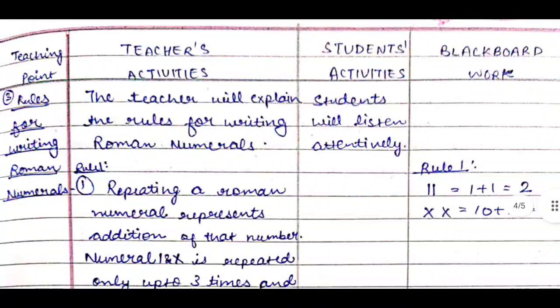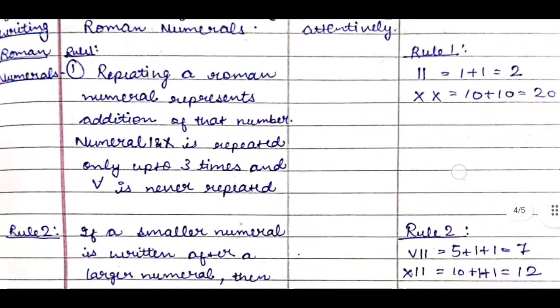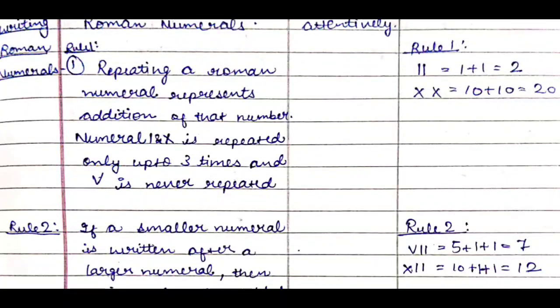Next teaching point is rules for writing Roman numerals. The teacher will explain the rules for writing Roman numerals. Students will listen attentively and we will simultaneously do the blackboard work. The teacher will tell: Rule 1—Repeating a Roman numeral represents addition of that number. When we repeat it, it means addition. Numeral 1 and 10 is repeated only up to 3 times, and V is never repeated. Like I and I makes 2, and X represents 10, so 10 plus 10 is 20.